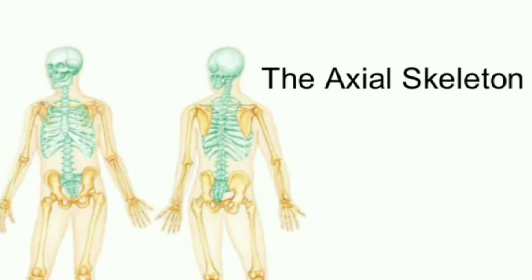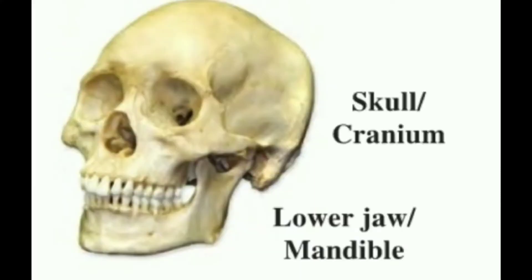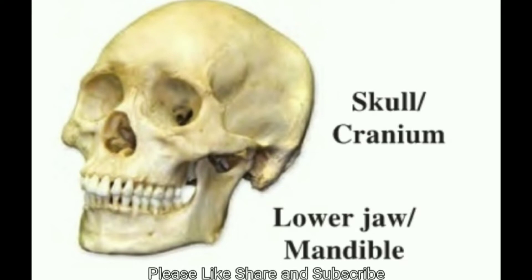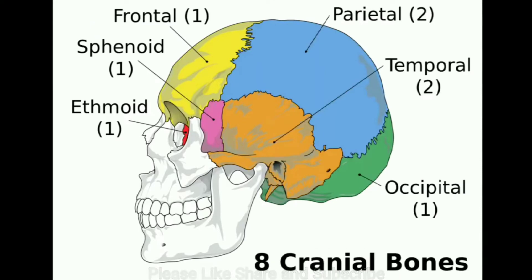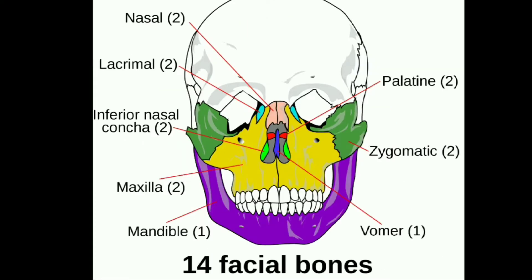The axial skeleton — Skull: The skull is formed by the bones of the head and face. The bones of the skull are flat and strong. There are altogether 22 bones in the skull — eight in the head and 14 in the face. Except for the lower jaw, none of the bones of the skull can move.